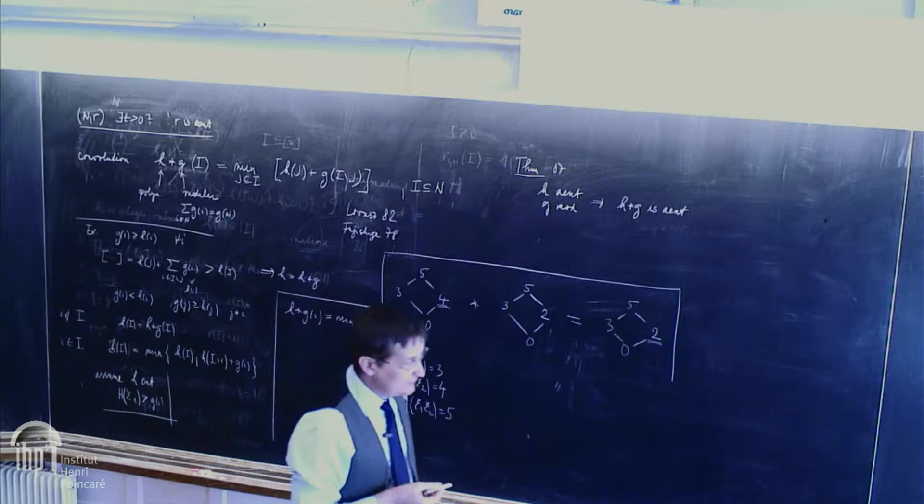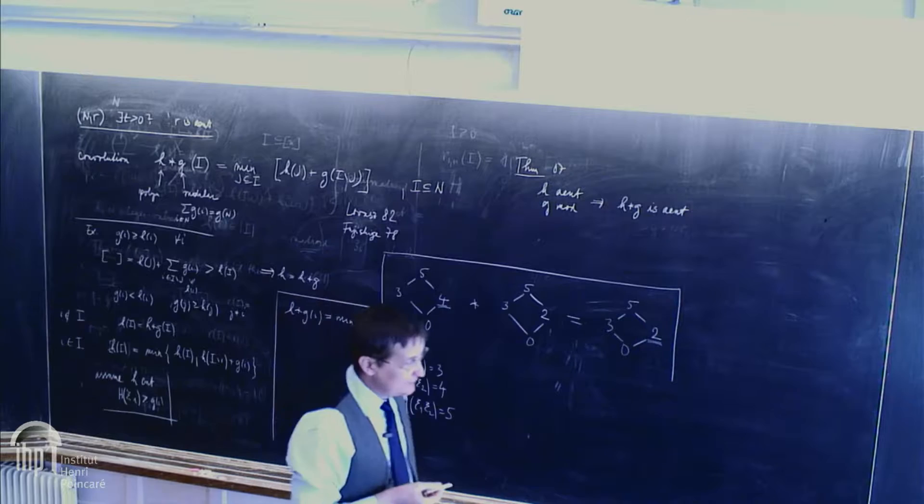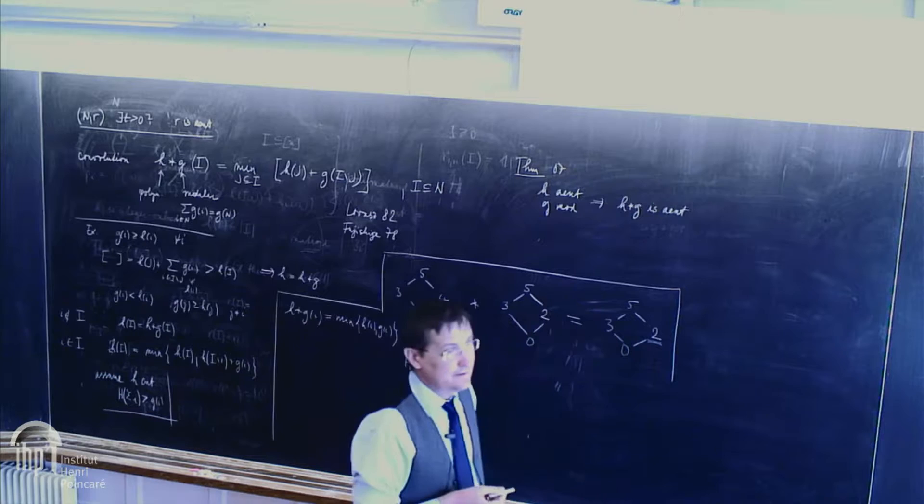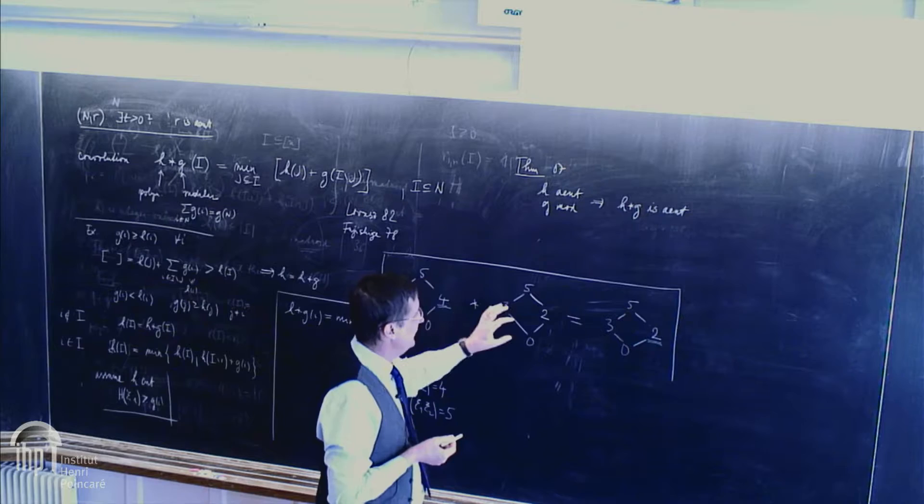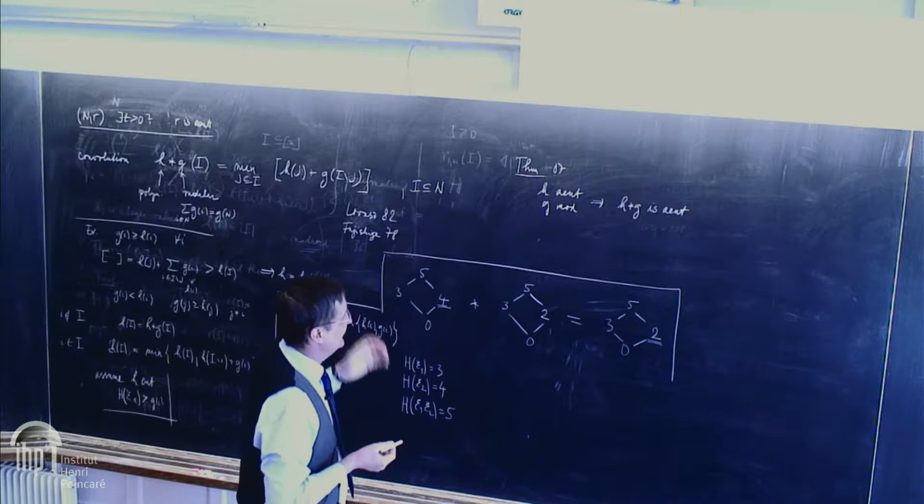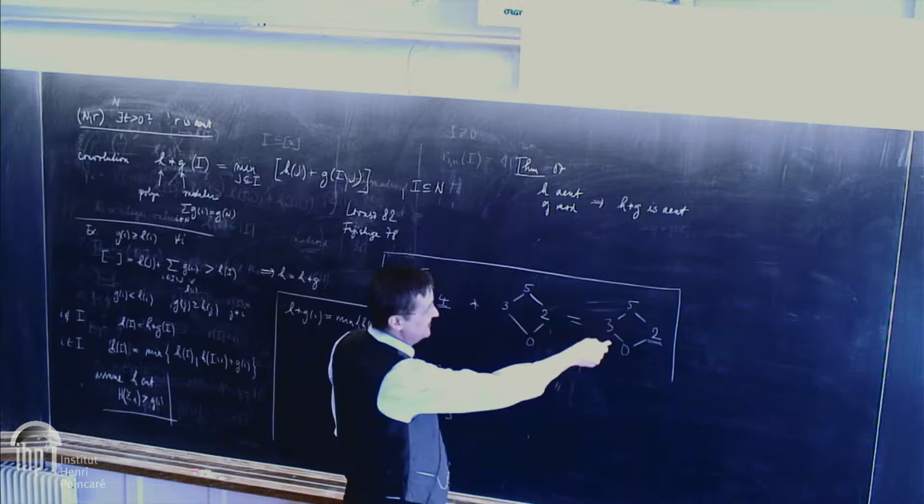Which means, which has some implications for the study of the entropy region, because this is like, if I have some point in the region, then I can manipulate some values and get another point in the region. Now, in this example, it was not useful, because I started from some point and I got a non-interesting point. This is a non-interesting point because things are independent.